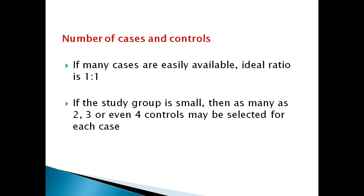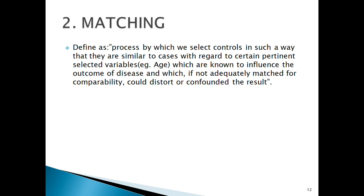At least you need one control for every case. While selecting controls you need to follow a step called matching — every control should be matched based on age and gender. For example, if you take a male patient with cancer aged 40, you need to select a control of the same age and gender but without the disease. This is what is known as matching: controls are matched based on age and gender.